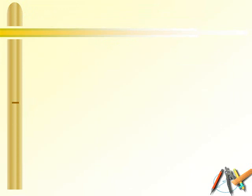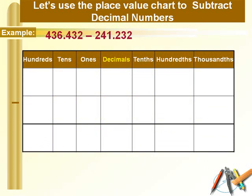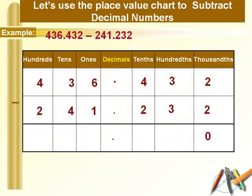Now let's use this place value chart to subtract decimal numbers. For example, we need to subtract 241.232 from 436.432. Simply make a place value chart, put the decimal point in the decimal column, and place the digits at their respective places. Similarly place the second number below. Now let's start subtracting the digits on the right of the decimal point. First, subtract at the thousandths place: 2 take away 2 gives 0.